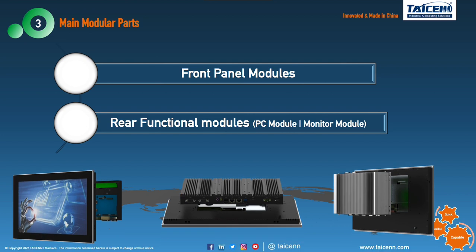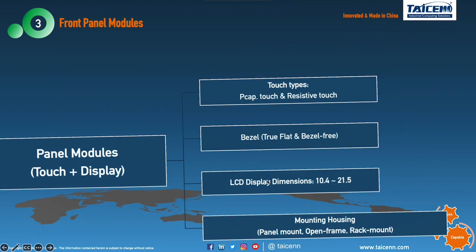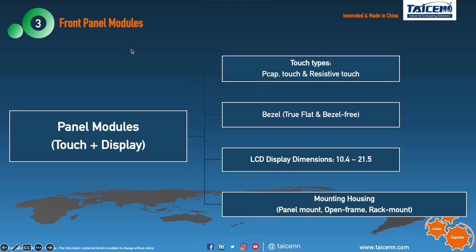This picture shows our main modular parts — front part, front panel modules, and the rear functional modules. We have PC modules for panel PC, and monitor modules for panel PC or for monitors. Front panel modules mainly include touch screen, bezel, and display.